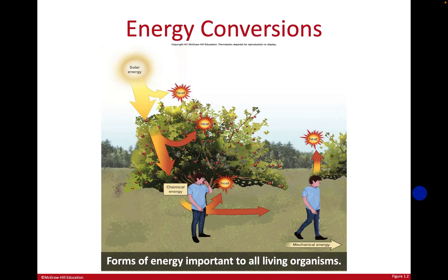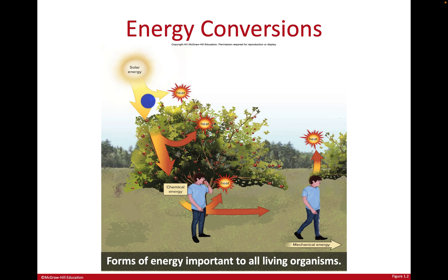Here's an example of the first law of thermodynamics — energy is converted. Solar energy from the Sun comes in; some of it is not absorbed by organisms and is released as heat. Other energy is absorbed by plants or photosynthetic organisms like algae, which do photosynthesis and convert it into chemical energy in the form of molecules like sugars.